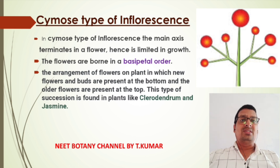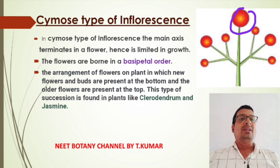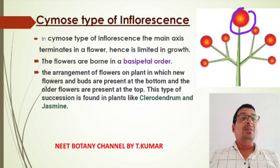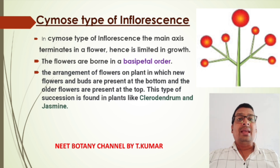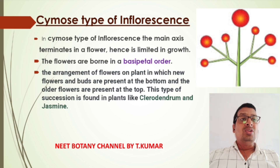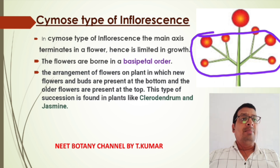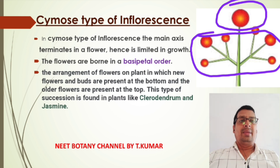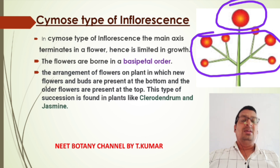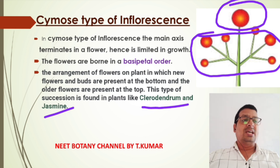In cymose type of inflorescence, the main axis terminates in a flower and shows limited growth. Flowers are borne in basipetal order, meaning new flowers develop at the base but older flowers are developed at the apex. This arrangement is seen in clerodendron and jasmine.